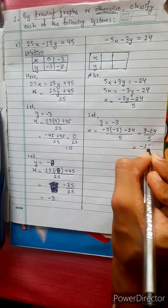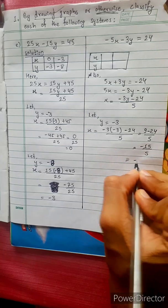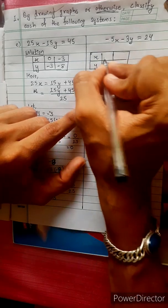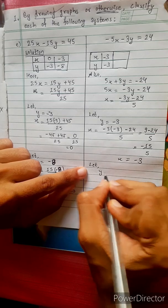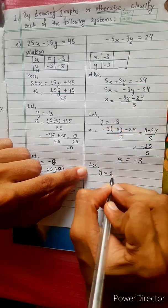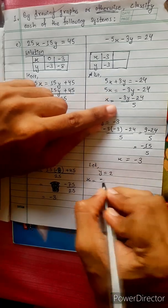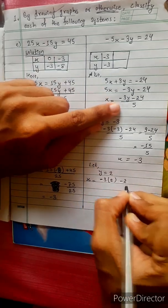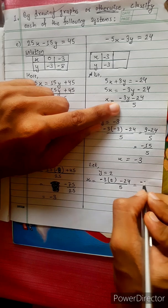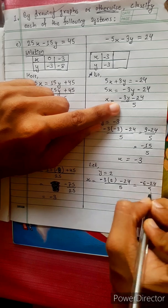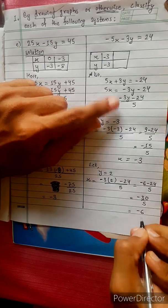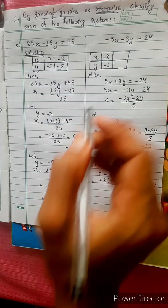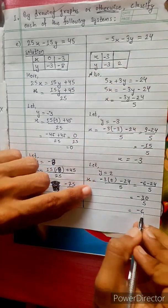That gives minus 15 divided by 5, so x equals minus 3 when y equals minus 3. When y equals minus 2, x equals minus 3 times minus 2 minus 24 divided by 5, which is minus 6 minus 24 divided by 5, equals minus 30 divided by 5, so x equals minus 6. When y equals 2, x equals minus 6.